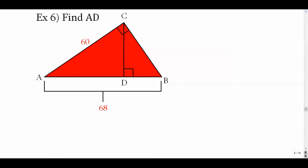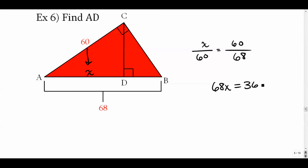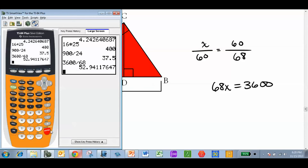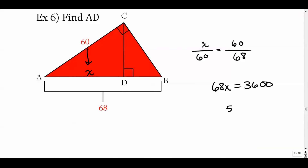Example 6: find the length of segment AD, called x. No altitudes needed. Put 60 in the proportion, then the closest number (68), then the whole hypotenuse. So 68x = 60² = 3600, giving x ≈ 52.94. To find the other sub-segment, subtract 68 from that answer. You can then use the Pythagorean theorem on the full right triangle — with legs 60 and 68 — to find any remaining side.